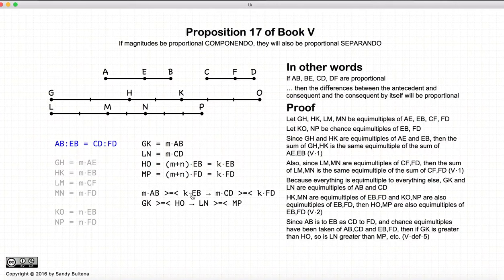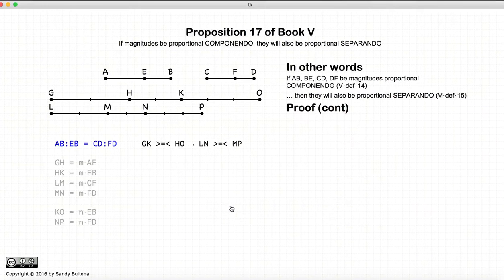Well, m and k can be any two integers we want, but let's use the ones where we have defined GK and LP and so on and so forth. So m times AB is equal to GK, k times EB is equal to HO, m times CD is LN, and k times FD is MP. So now we're basically saying if GK is greater than HO, then that means that LN is greater than MP. So I've just rewritten this here, I was running out of space, so I've just rewritten this here from the previous page.